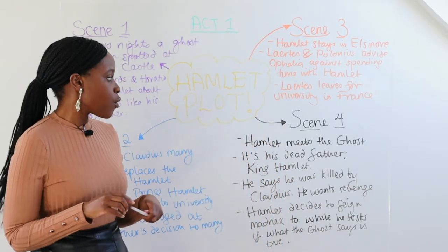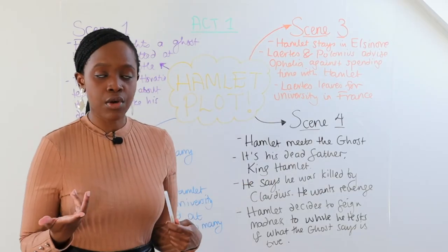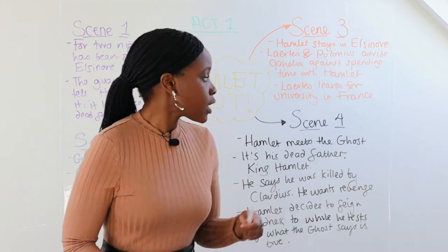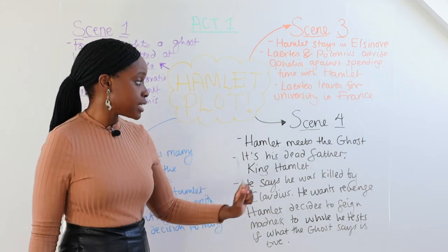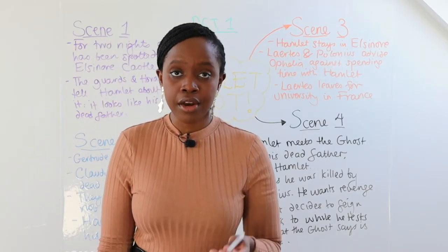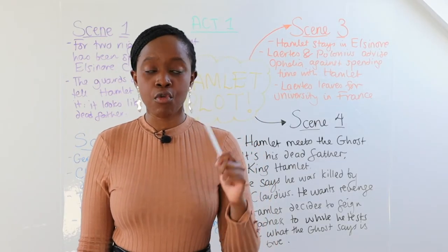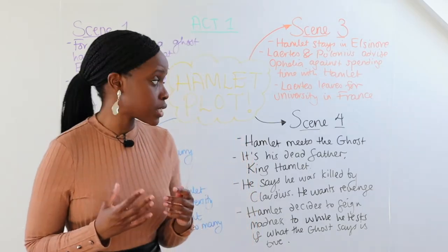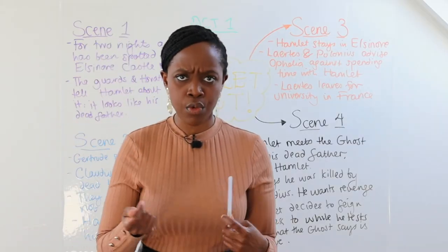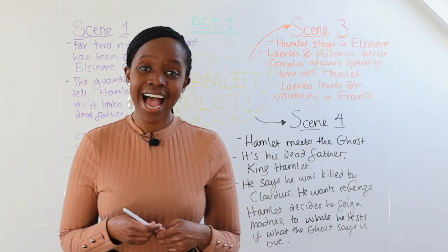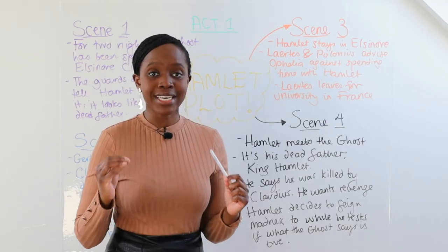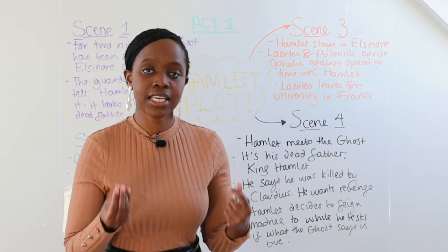Act One ends with Scene Four, whereby Horatio tells Hamlet that a ghost looking very similar to his father is roaming around. Hamlet decides to meet the ghost, and he sees that it looks exactly like his dead father. The ghost makes a powerful revelation: he was killed by his own brother Claudius, who was quick to become king soon after. The ghost specifically tells Hamlet he must avenge his death and kill Claudius.